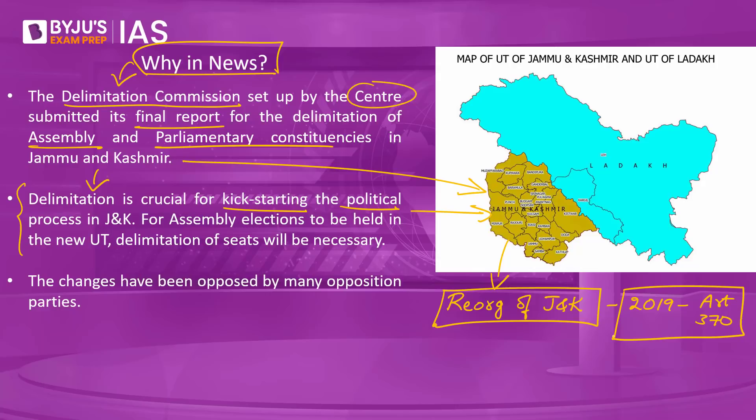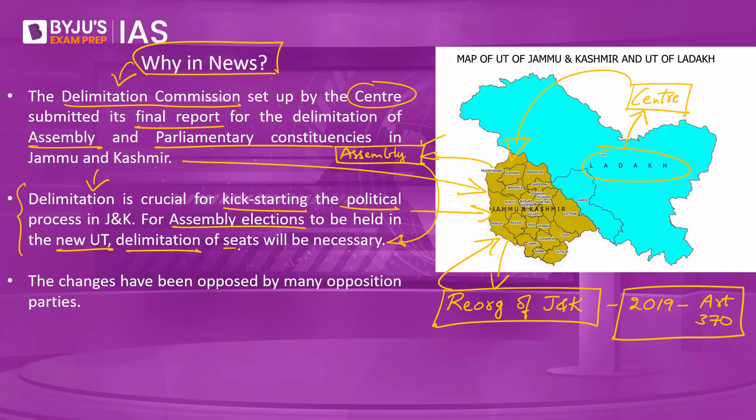After the special status of J&K was revoked in 2019 under Article 370, the state of Jammu and Kashmir was reorganized by the government into the union territory of J&K and the union territory of Ladakh. While Ladakh has been placed under direct administrative control of the center, J&K has been made into a union territory with its own assembly, on the lines of Delhi and Puducherry. To hold assembly elections for J&K, delimitation of constituencies was essential.